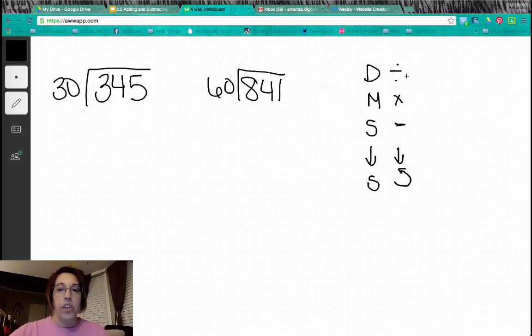Okay, so let's look at this. We're going to use our divide, multiply, subtract, bring down, and start over process. This is very much like dividing with one digit, only we have two digit divisors now. We're going to look at the first two numbers of our dividend. This means we are going to start with a zero up here.